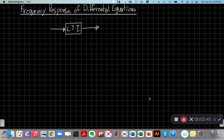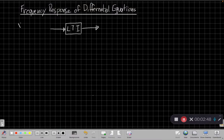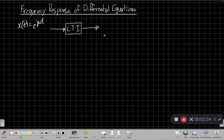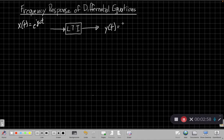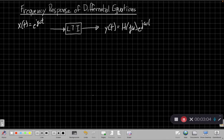Just to review, if my input x(t) is e^(jωt), a single complex exponential going into the system, the output will be that same complex exponential scaled by the frequency response of the system.